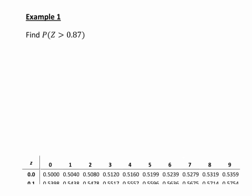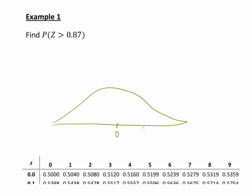In the first case, let's find the probability of a value z in the standard normal distribution being greater than 0.87. Let's draw a sketch — a very approximate diagram just to see what area we're looking at. Our standard normal curve is centred at 0, so 0.87 is somewhere up to the right, and we're wanting the probability of z greater than 0.87 — that is, the area under the curve to the right of 0.87.